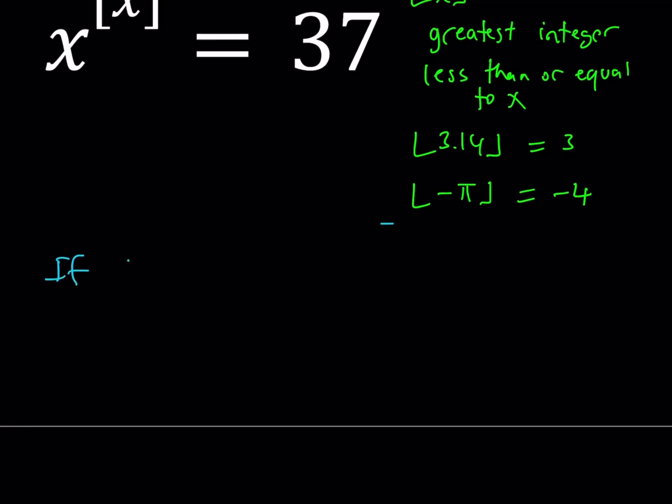If x is between 0 and 1, what do we get? If you have a number that is between 0 and 1, but it could include 0, that means its floor value is going to be 0. So we have x to the power of 0 equals 37. Obviously, 1 does not equal 37. So we don't get any solutions from this interval. We're going to look at it on different intervals.